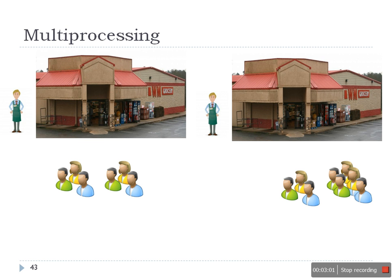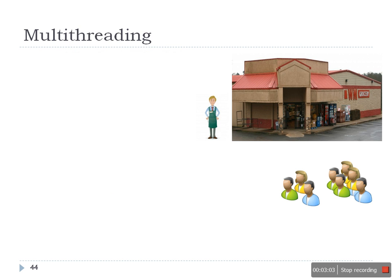In multi-processing, we create a new process — a completely new process — and the new process also needs space in memory. In multi-threading, we don't create any new process, we just create a thread of execution. So if we have one grocery store with four persons, they can perform four tasks simultaneously. The same scenario happens when a program has multiple threads — it can support multiple task execution at the same time.